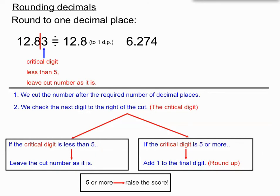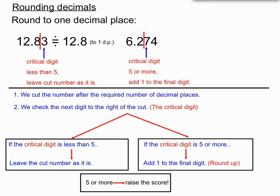Let's look at another example: 6.274, rounded to one decimal place. I'll cut it just after the two. The critical digit is the next one after the cut — in this case it's a seven. Seven is five or more, so I add one to my final digit. The final digit was going to be two, but I add one and write down 6.3. It's very good to write that notation in on test answers so the marker knows exactly what you've done.